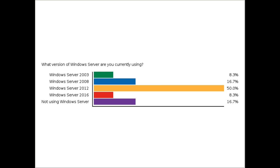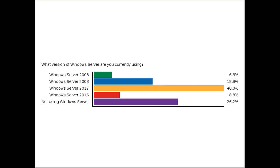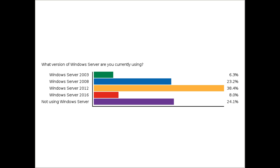The last question before we move into Jeff's presentation: what version of Windows Server are you currently using, if you are using one? The option is there to say you are not using Windows Server if you are not. Let us know if you are on one of the older versions, or if you have already moved to Windows Server 2016. Right now we have got about 185 people joining us in the room — thank you all for coming.